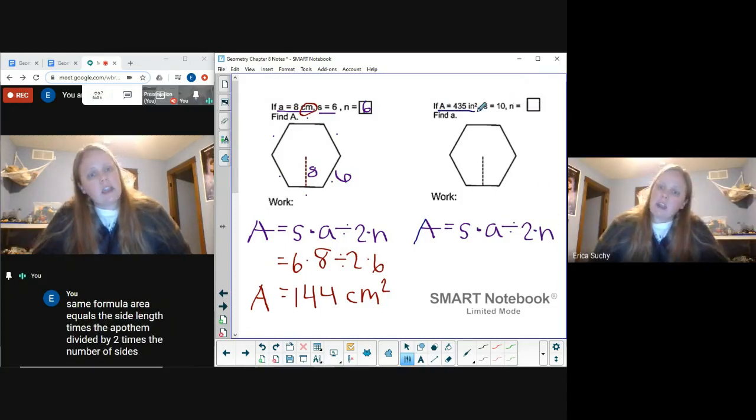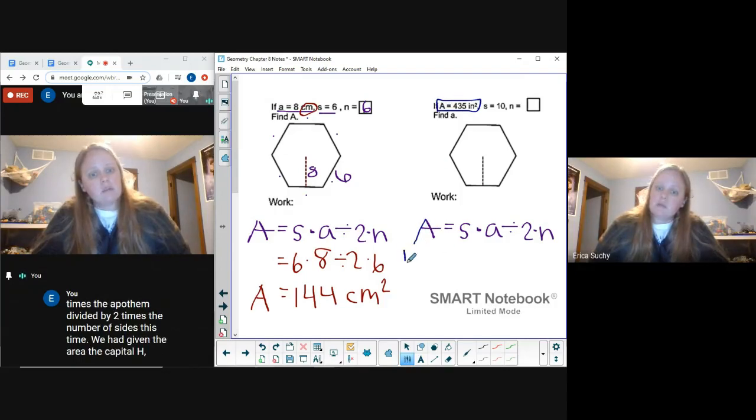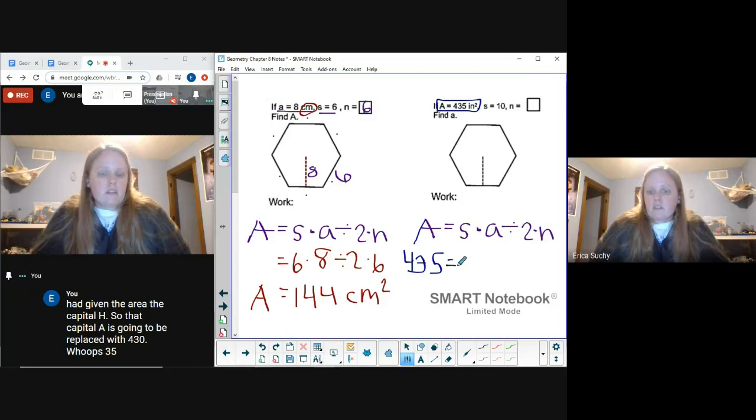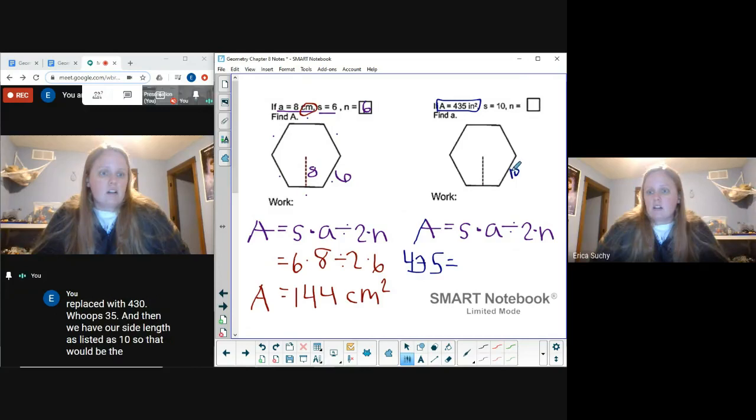This time we are given the area, the capital A. So that capital A is going to be replaced with 435. And then we have our side length listed as 10, so the sides are all 10s.